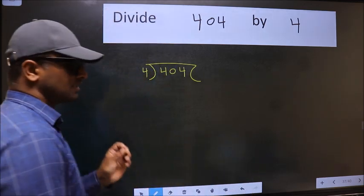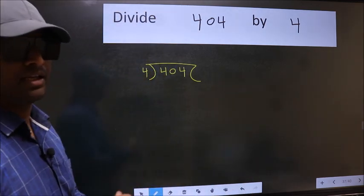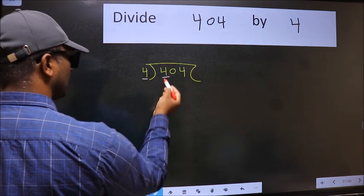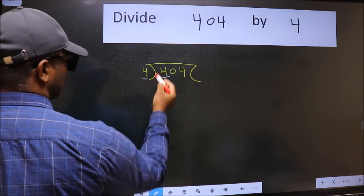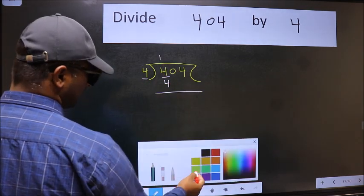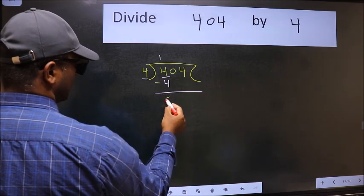This is your step 1. Next. Here we have 4. Here also 4. When do we get 4 in 4 table? 4 once, 4. Now we should subtract. We get 0.